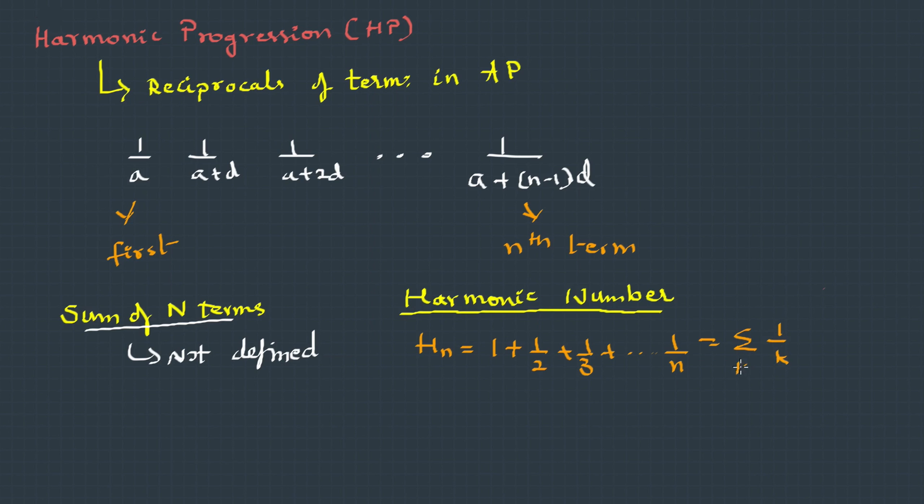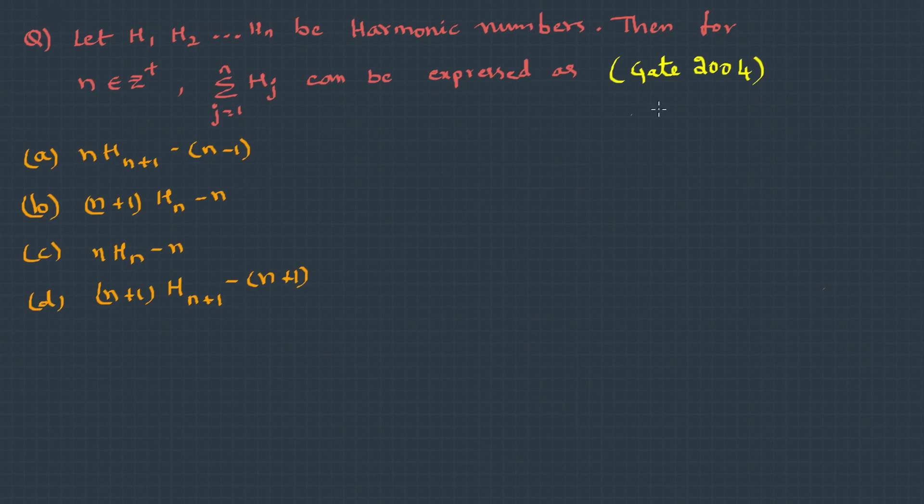Here is a question asked in Gate 2004: Let H1, H2, ... Hn be harmonic numbers. Then for n being some positive integer, Sigma(Hj) from j=1 to n can be expressed as...